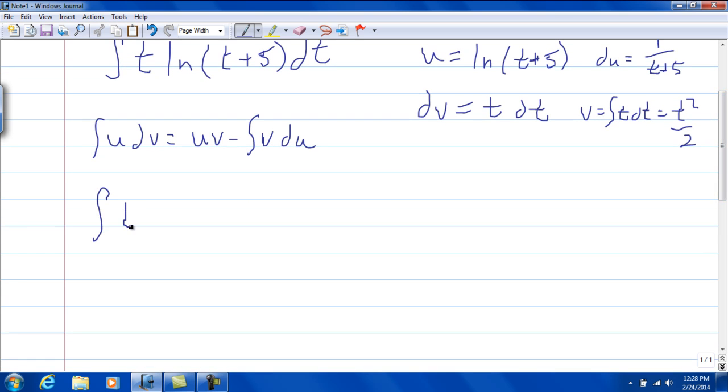So that the integral of t natural log of t plus 5 dt becomes uv, or u is natural log of t plus 5, times v. And v, we said it's going to be t squared over 2, minus v, which is going to be t squared over 2, du, and du was 1 over t plus 5 dt.